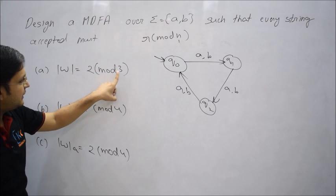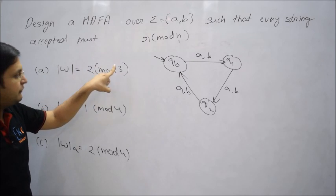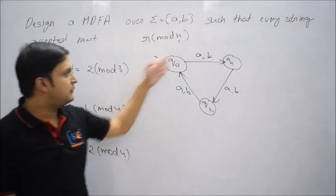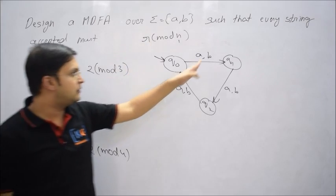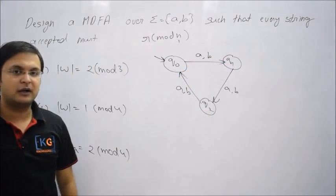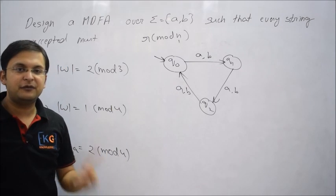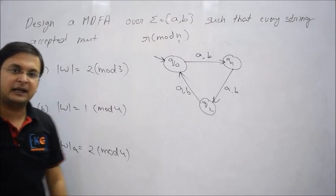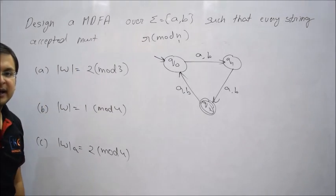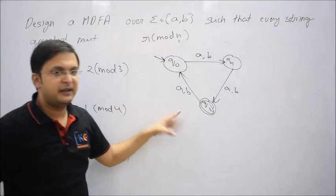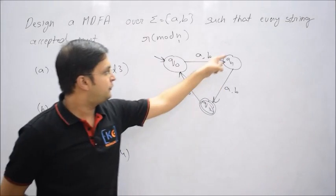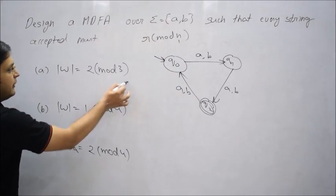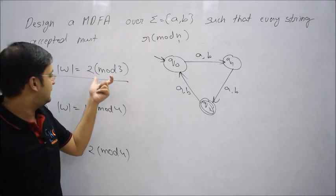So states 0, 1, and 2 cycle: from 0 go to 1, from 1 go to 2, from 2 go back to 0. The system is complete. The final logic: which is the final state? The question says remainder 2 must be accepted, so q2 is the final state. Verify: lengths 1, 2 — acceptable; 3, 4, 5 — acceptable; 6, 7, 8 — acceptable. Every string whose length satisfies 2 mod 3 is accepted.